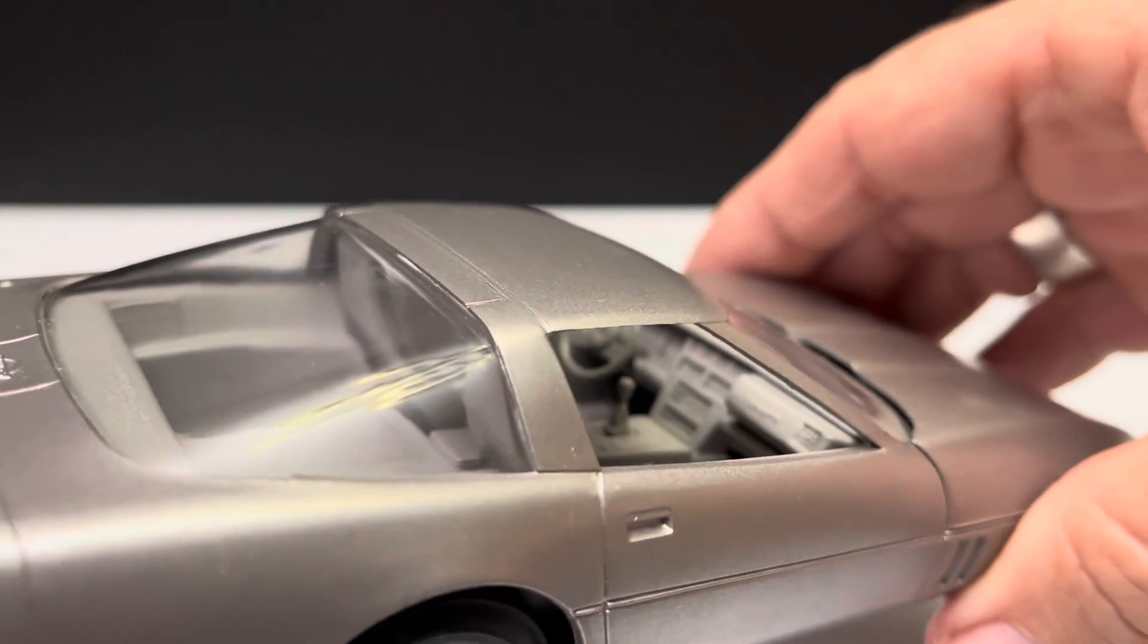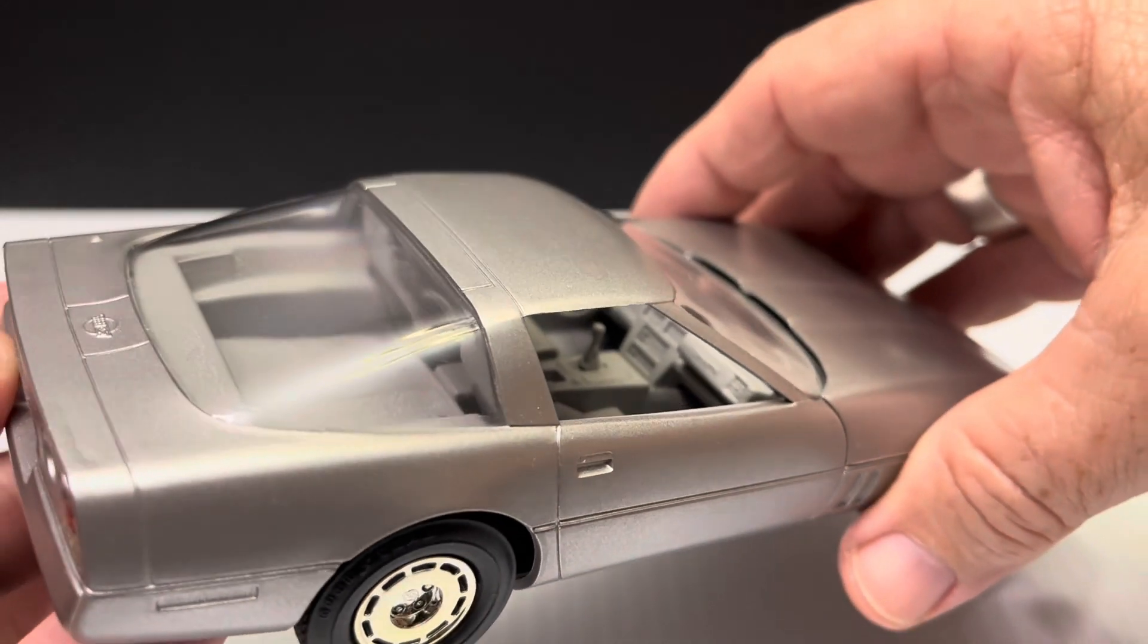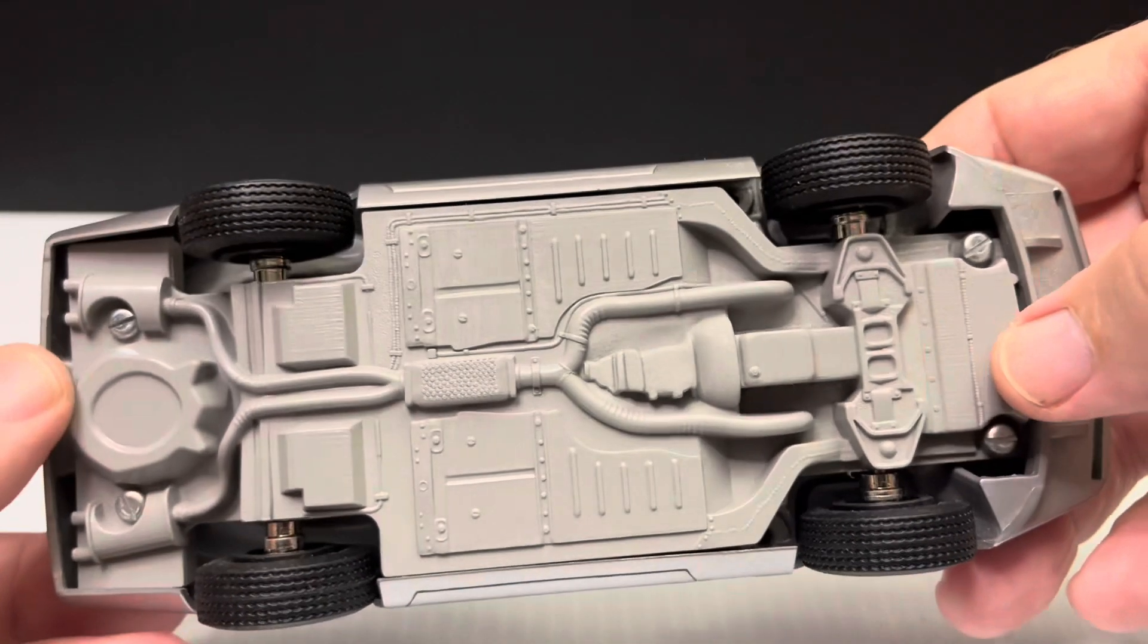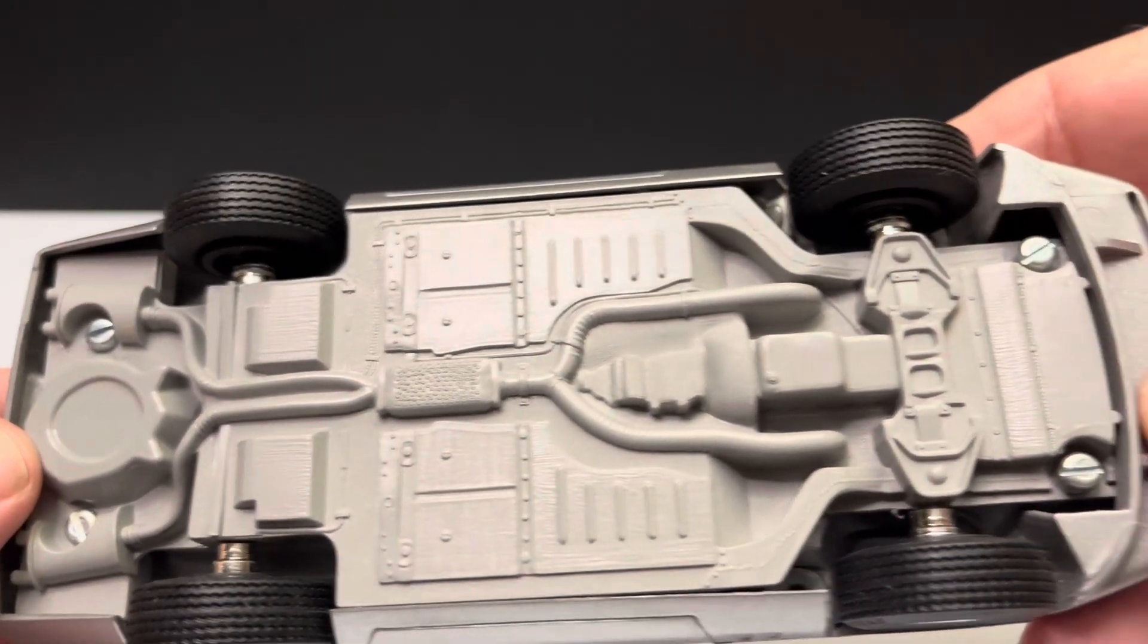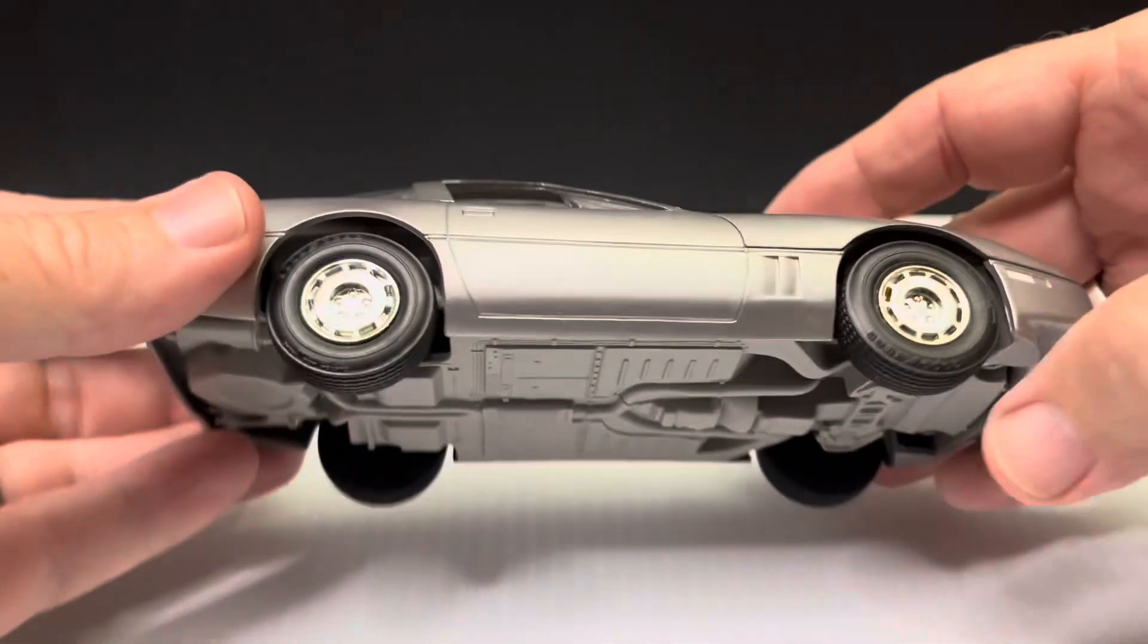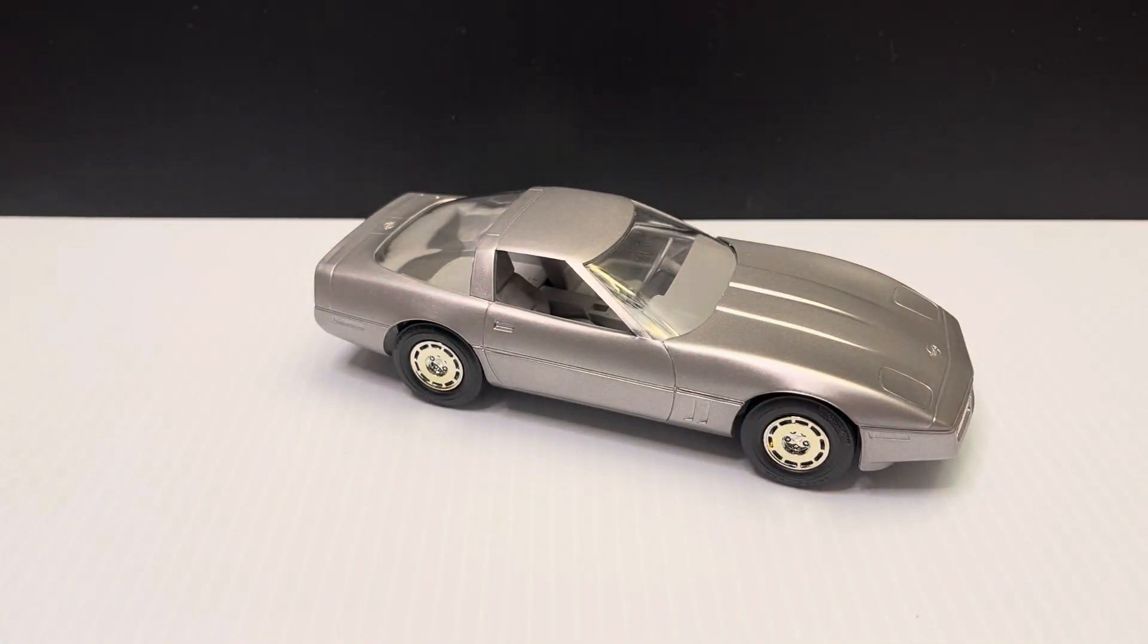This kit's got good interior detail. Try to get the camera to focus there. Good, I think that could paint up nicely. Everything's molded in, but still make a decent looking model. Let's go ahead and get my screwdriver here and get ready to take it apart.